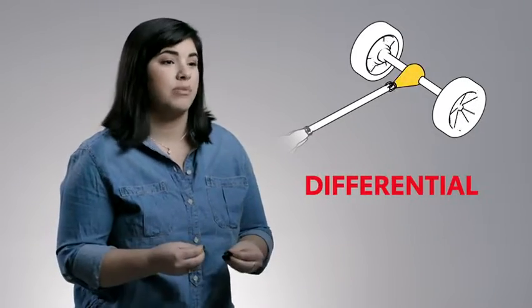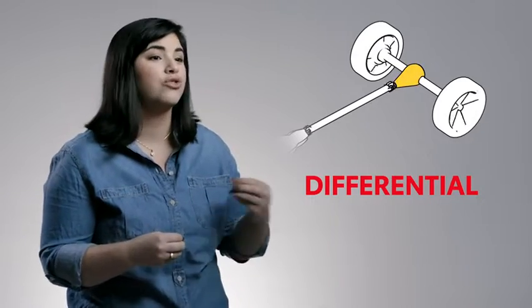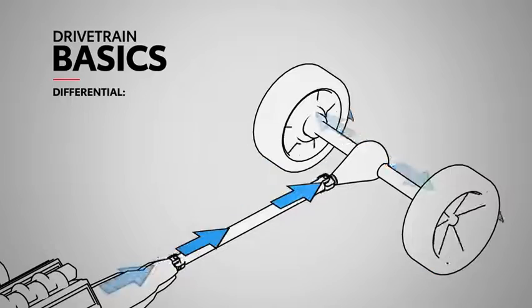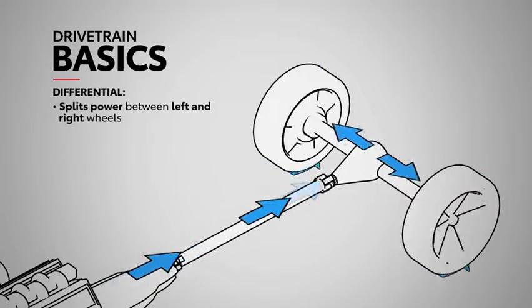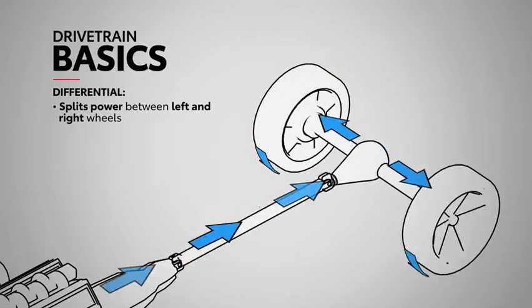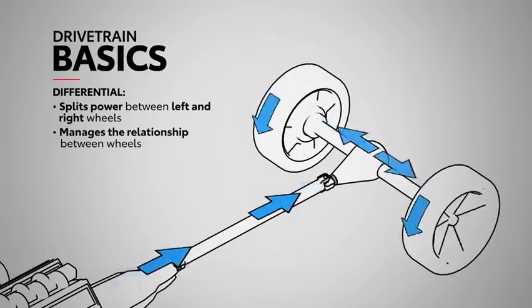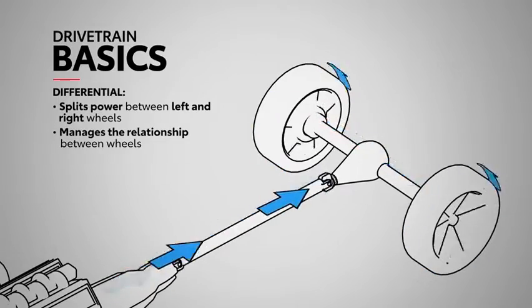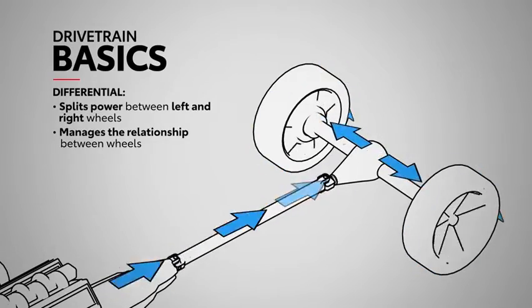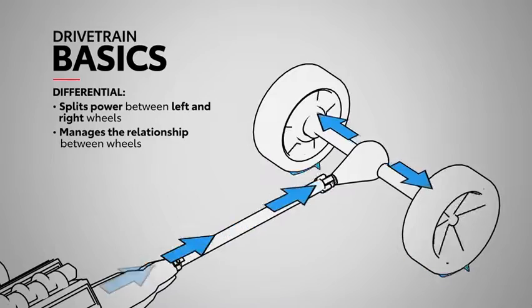This differential is the first step in understanding traction and drivetrain power flow. By controlling the distribution of power, it can also determine whether the wheels lock together or rotate independently.